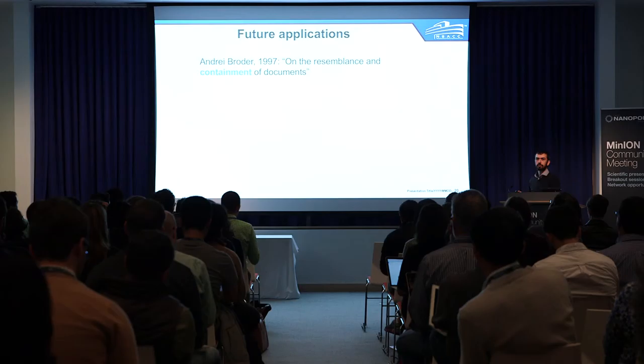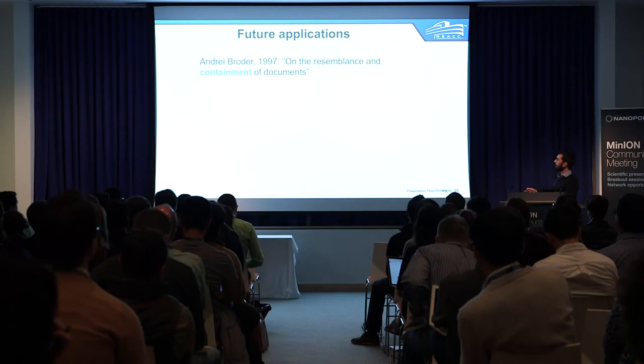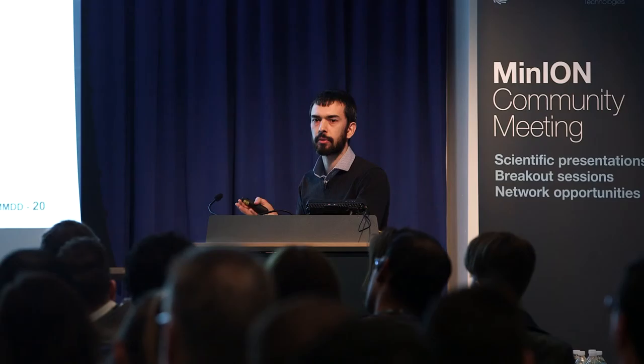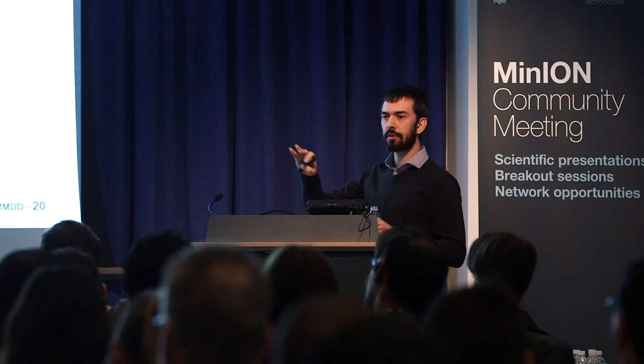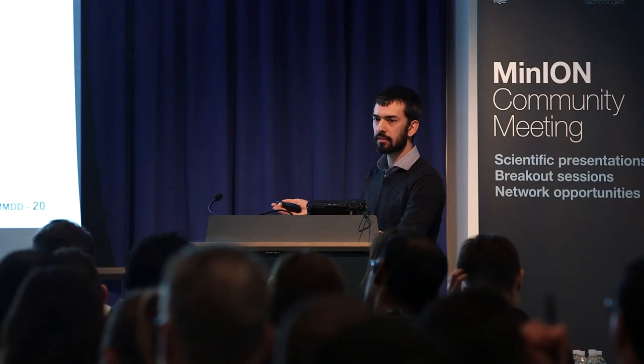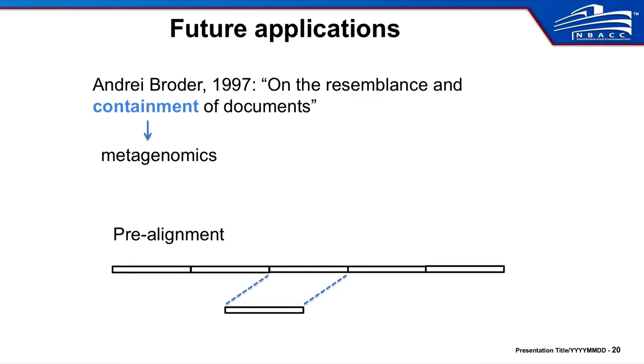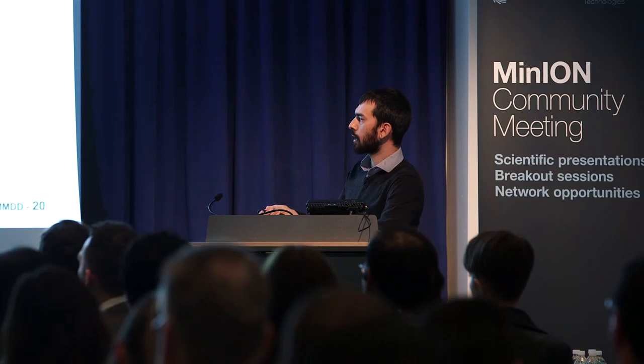There are other applications for this minhash algorithm. If you remember the original title of that paper, it's 'resemblance and containment.' Containment, in this case, could mean metagenomics. This is a little backwards from traditional metagenomics, where you would take each read and try to ask what it is. This is more like your whole read set is the large document, and then you're asking if each one of your reference genomes is contained in that read set. You need somewhat sufficient coverage, but we've done some initial tests of this and it looks promising. Another application is something like pre-alignment or pseudo-alignment, where you localize your minhashes to windows in a genome, and then you can take something smaller like a read and figure out — instead of which genome is it — where in the genome does it go. We've done some tests with that and it looks like there's also a lot of potential there.